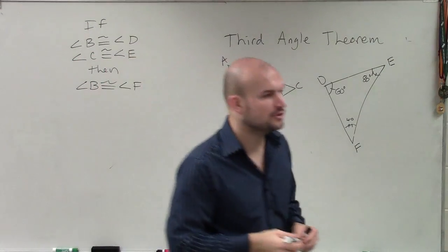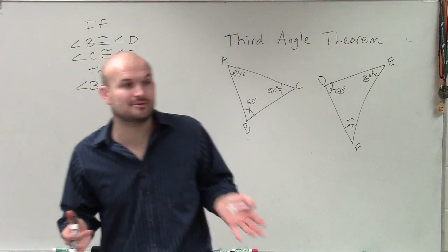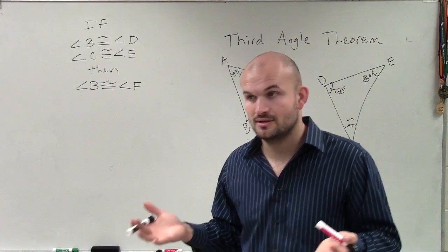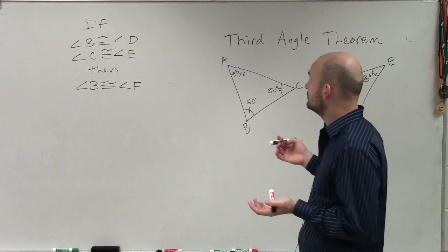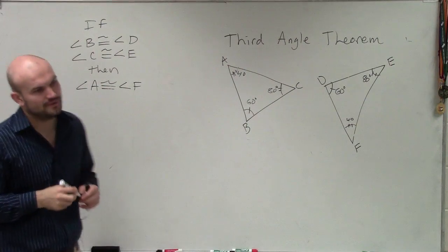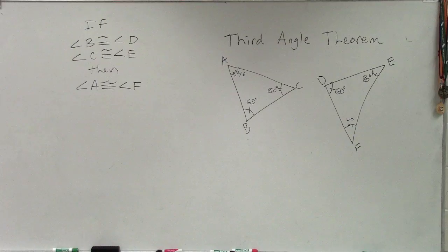So when you're looking at proofs or solving problems with angles, if you're able to show that two out of the three angles are congruent, then you can say that the third angles are equal. That's just something I want you guys to be thinking about and looking for.